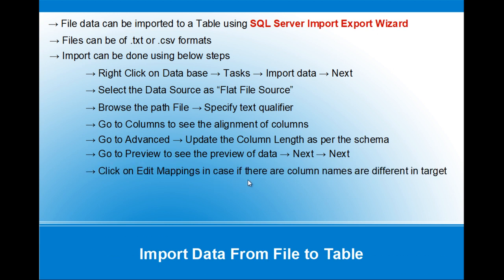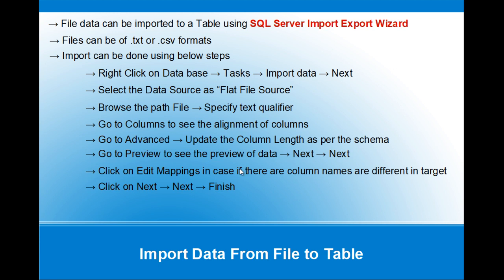Then click on Edit Mappings. This is useful when the column names of the source and target are different — that is, the column names of the file and the column names of the target table if it is already created. If the names are different, we need to map them explicitly. If the column names of the file and the target table are the same, then they will be automatically mapped. Then click Next, Next — you can save it as a package as well, but for now we will demonstrate without saving as a package. Then click Finish. The data will be imported.